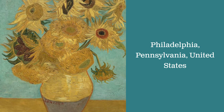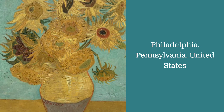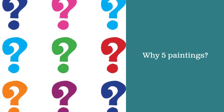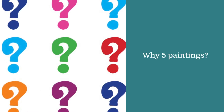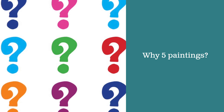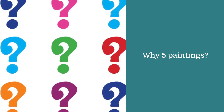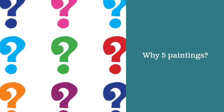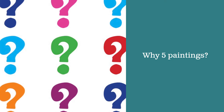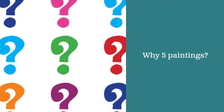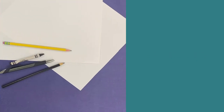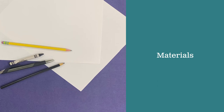This sunflowers painting is in the United States — it's in an art museum in Philadelphia. Now why did van Gogh paint the same picture almost five different times? He was getting ready for a visitor to come stay with him when he had a house in the south of France, and he was decorating the house and chose to decorate with five pictures of the sunflowers.